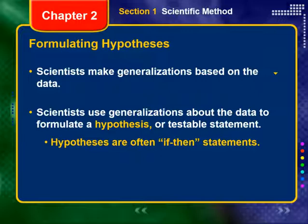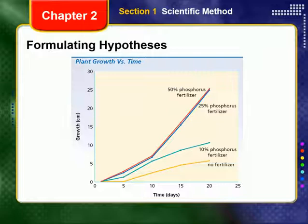As scientists examine and compare the data from their own experiments, they attempt to find relationships and patterns. In other words, they make generalizations based on the data. Generalizations are statements that apply to a large range of information. To make generalizations, data are sometimes organized into tables and analyzed using statistics or other mathematical techniques, often with the aid of graphs and a computer. Scientists use generalizations about the data to formulate a hypothesis or testable statement. The hypothesis serves as a basis for making predictions and carrying out further experiments. Hypotheses are often drafted as if-then statements. The then part of the hypothesis is a prediction that is the basis for testing by experiment.